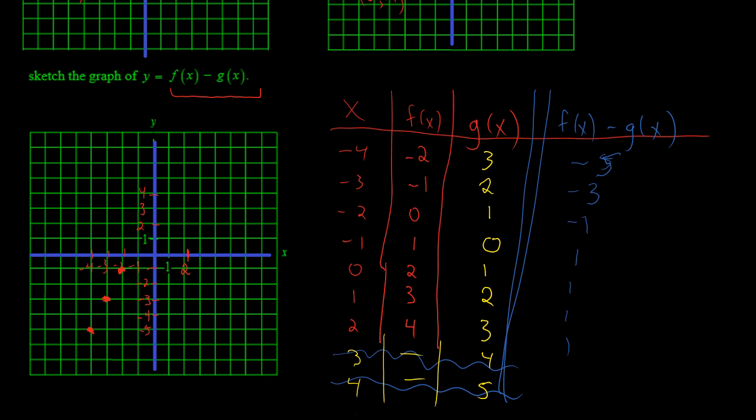It should look linear if we're subtracting two linear functions. And then at negative 1, we get a 1. So at 0, we have a 1.